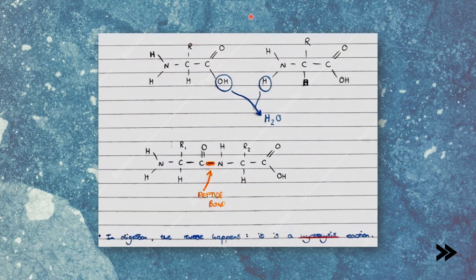Let's have a look at this on a diagram. The carboxylic acid group loses an OH, the amine group loses an H atom. These combine to form H₂O, water — therefore it's a condensation reaction. The amino acids join to form a peptide bond, which consists of C-O-N-H. Note that in digestion, the reverse of this reaction happens: it is a hydrolysis reaction and involves the use of a molecule of water to split the dipeptide into two individual amino acids.